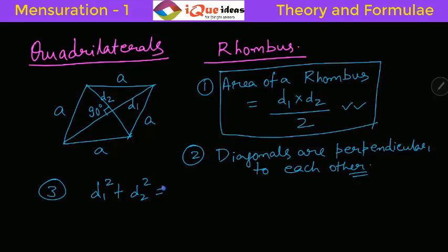The special formula for Rhombus: the sum of squares of diagonals equals 4 times the side square. Remember all sides are equal in a rhombus. So D1² + D2² = 4A². Diagonals are perpendicular to each other. Area equals D1 × D2 / 2.